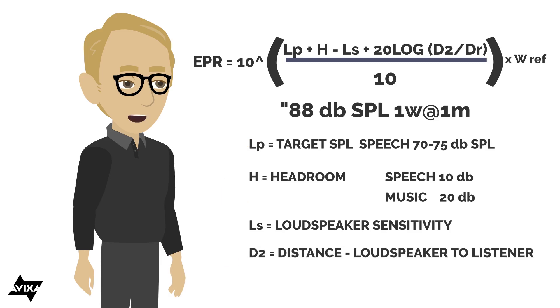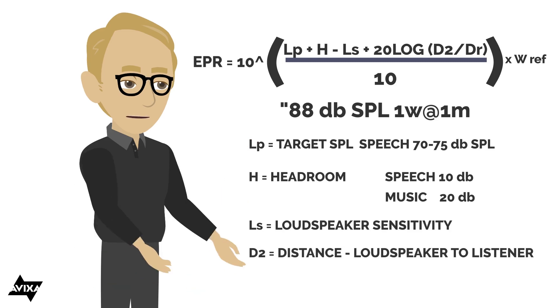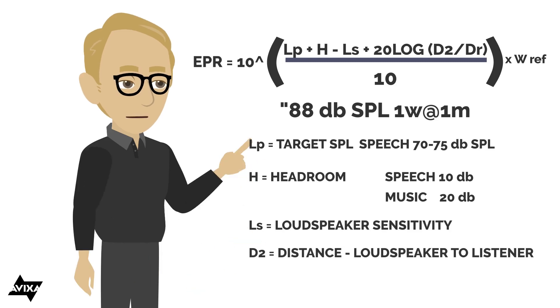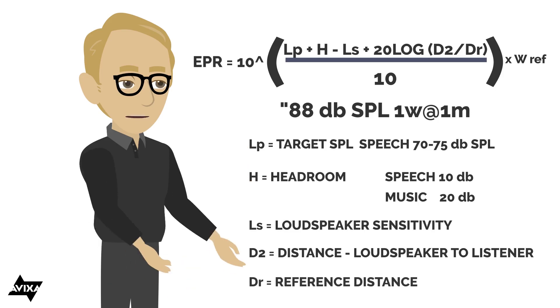d2, this is the distance actually from the loudspeaker to the listener. And then dr, anytime you see r that means it's reference distance. In this particular case we're going to get the reference again from the loudspeaker specification.